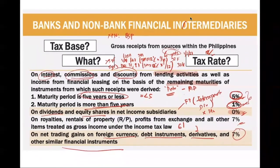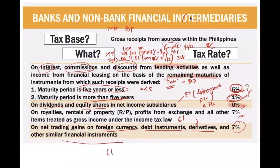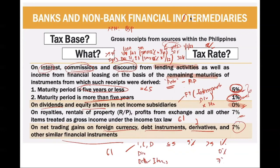Summary for banks: look at the gross income. If interest, commission, or discount — 5 years or less: 5%; more than 5 years: 1%. If intercorporate dividends: 0%. All other items of gross income — trading gains, royalties, rentals, whatsoever — 7%. In percentage tax, just identify the business activity, the tax base, and the tax rate.